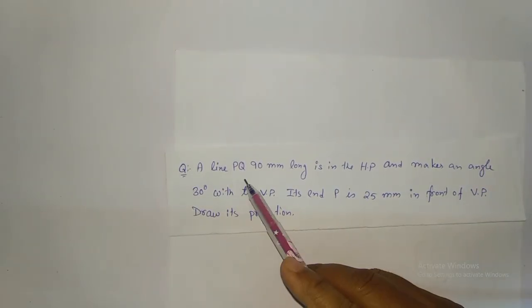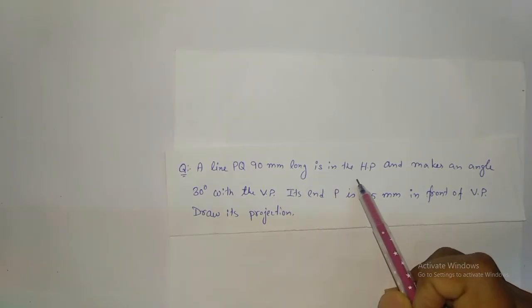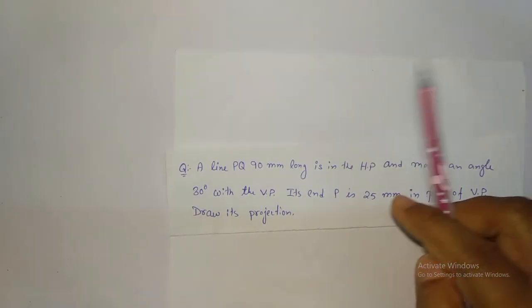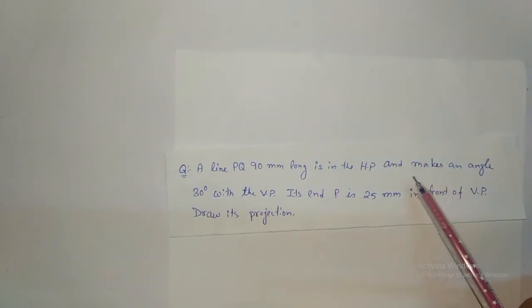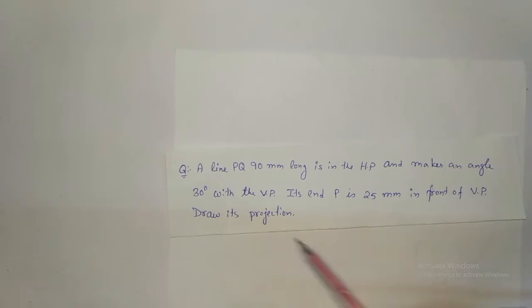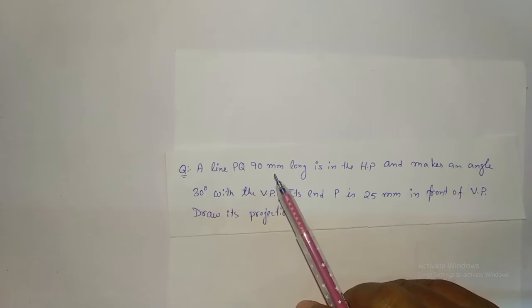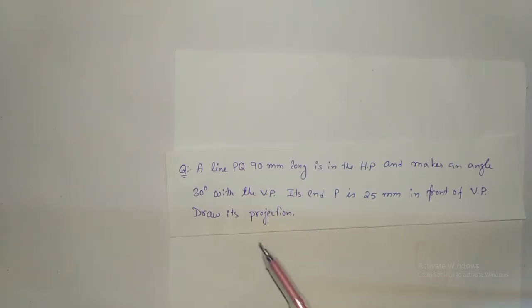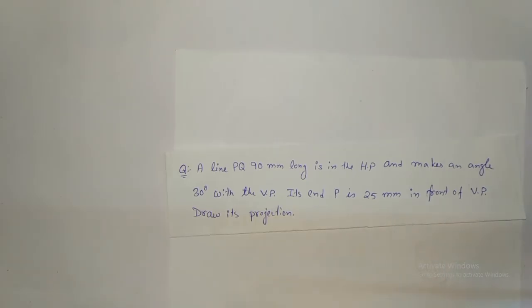The question is: a line PQ 90 mm long is in the HP — means your line is in the horizontal plane. And it makes an angle 30 degrees with the VP. Its end P is 25 mm in front of the VP. Draw its projection.